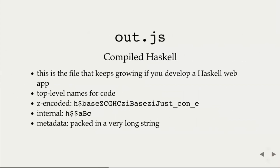That's the non-Haskell code. Out.js is the compiled Haskell code — the file that has everything. If you have a team working on an application with more dependencies and more code, this is the file that keeps growing. All names are top-level, in global scope. Exported names start with H$ and have a fully Z-encoded name. Internal names start with H followed by more characters. These names are not very informative — they're usually allocated by the linker at link time to make them somewhat short. Besides the code itself, there's also metadata.